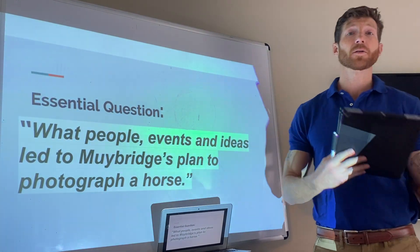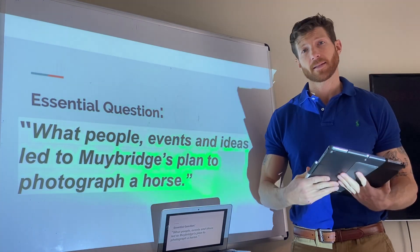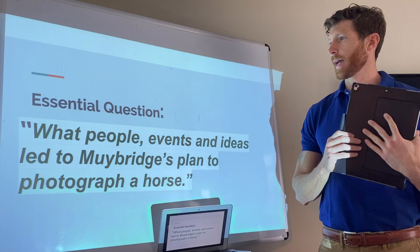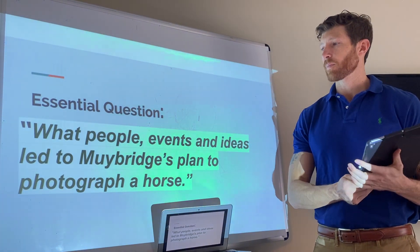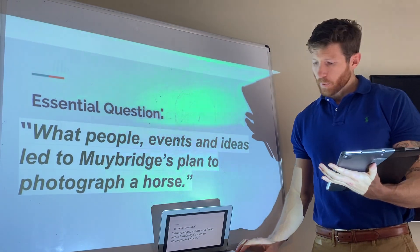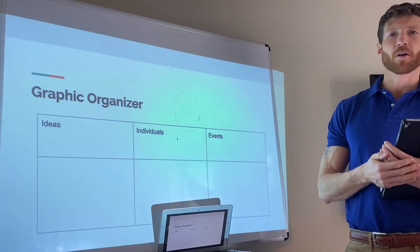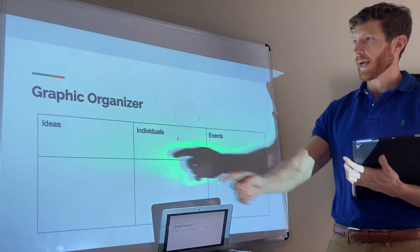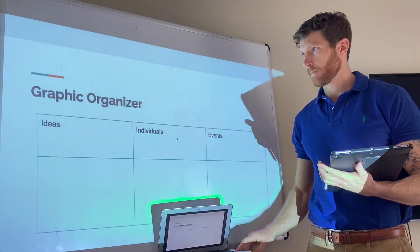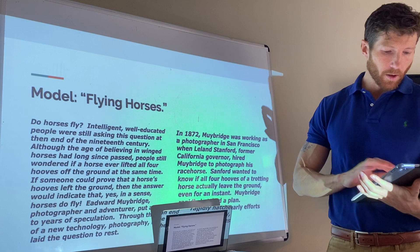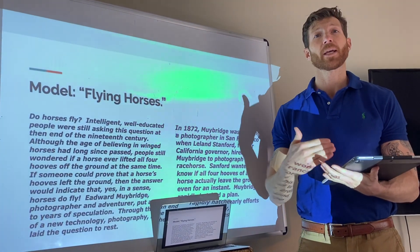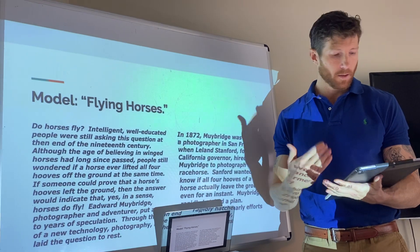So we're going to start today by looking at an essential question. That question is: what people, events, and ideas led to Muybridge's plan to photograph a horse? We're going to be using this graphic organizer to help us track ideas, individuals, and events. Here is our text — I want you guys to do a first read along with me.